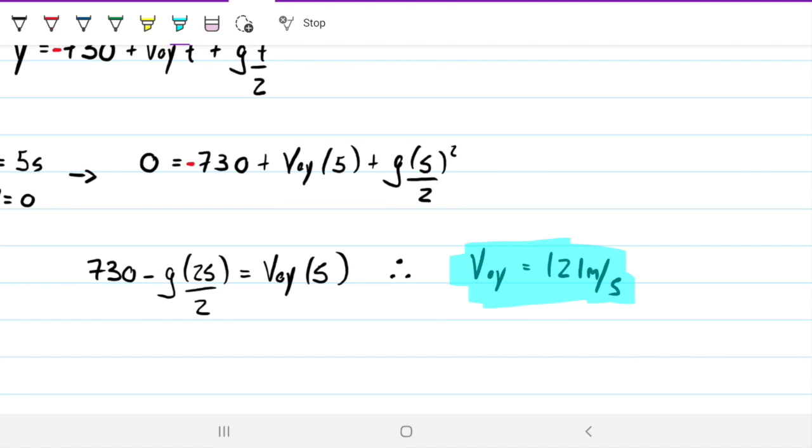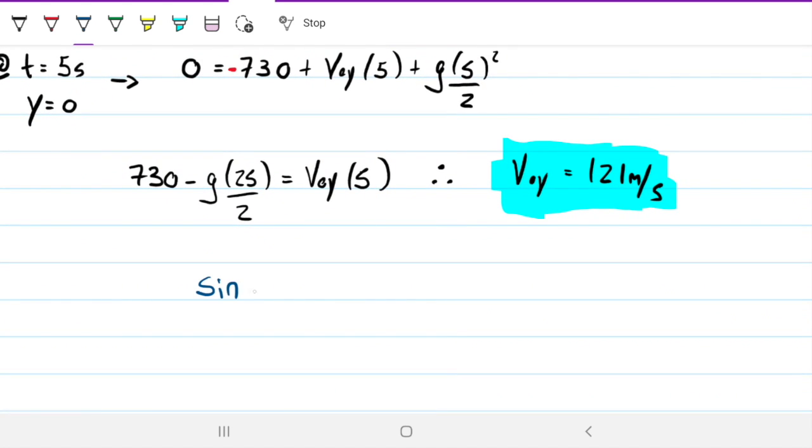And therefore, V0Y is 121 meters per second. So this is the original velocity when the projectile detaches from plane. But because we know there's a relationship between V0Y and V0, we can simply calculate V0. Remember that the sine of 37 equals V0Y divided by V0. Therefore, if I want to find V0, I just need to divide the 121 by the sine of 37. And that's going to give me 201.89. We'll go ahead and round that up to 202 meters per second. So that's the original velocity of the plane.